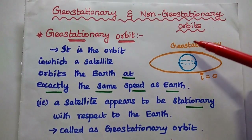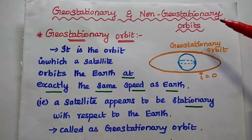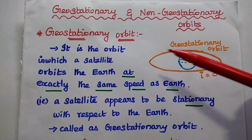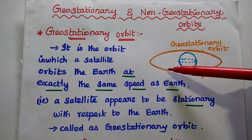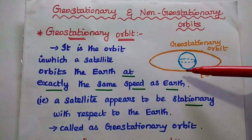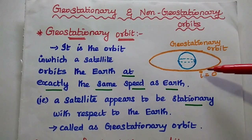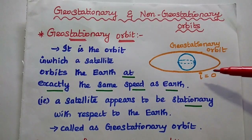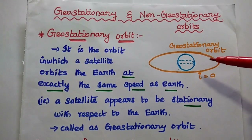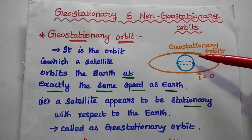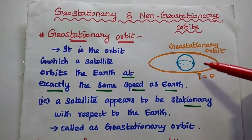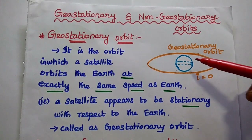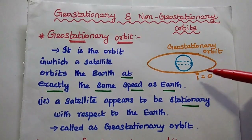We are going to discuss geostationary and non-geostationary orbits in detail. Starting with geostationary orbit: it is the orbit in which a satellite orbits the earth at exactly the same speed as the earth in the eastward direction. The satellite appears to be stationary with respect to the earth because both are rotating with the same speed in the same direction. The geostationary orbit is equivalent to the equatorial plane.